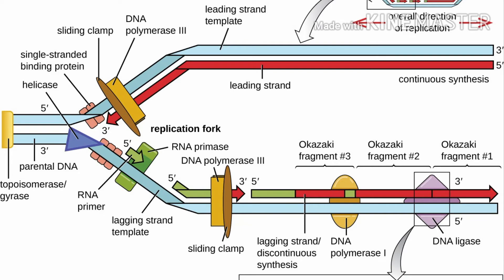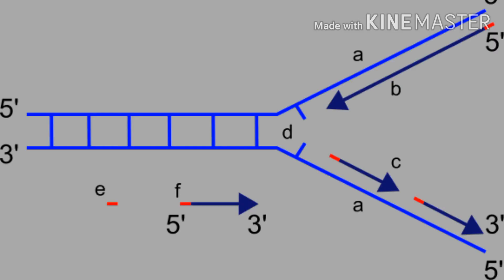Then CDT1 protein — CDC10 Dependent Transcript 1 protein — it is the replication licensing factor and also a part of the pre-replicative complex, and it promotes the loading of MCM. Then MCM — Mini Chromosome Maintenance protein — it has helicase activity and unwinds the DNA strands.